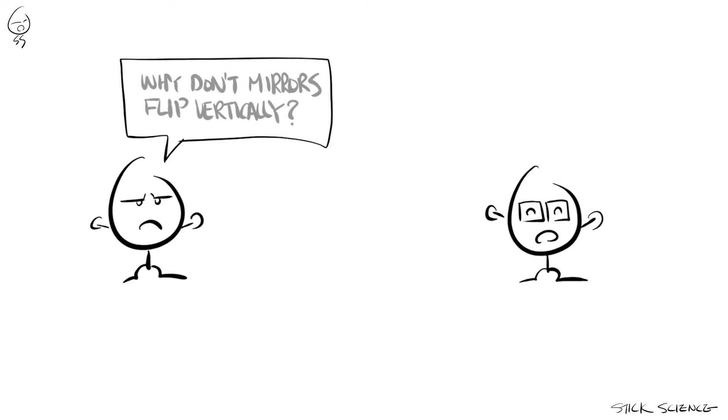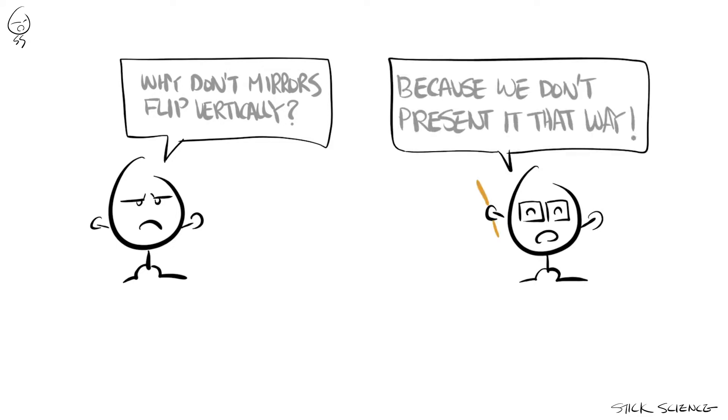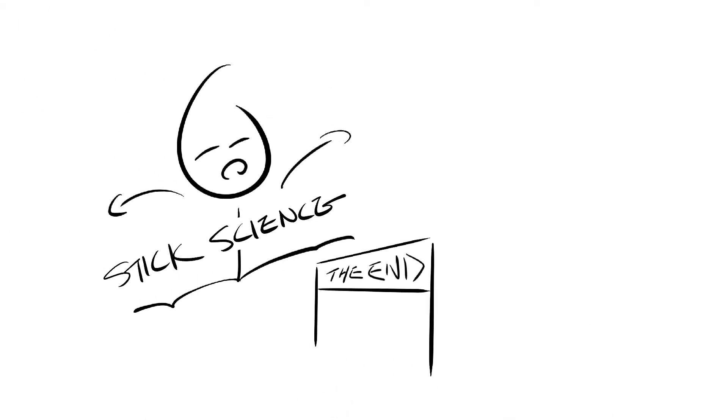So to answer the question, why don't mirrors flip vertically? Well it's because we don't present images to mirrors that way. We usually only flip horizontally, like putting on a t-shirt, so that's what it shows us.